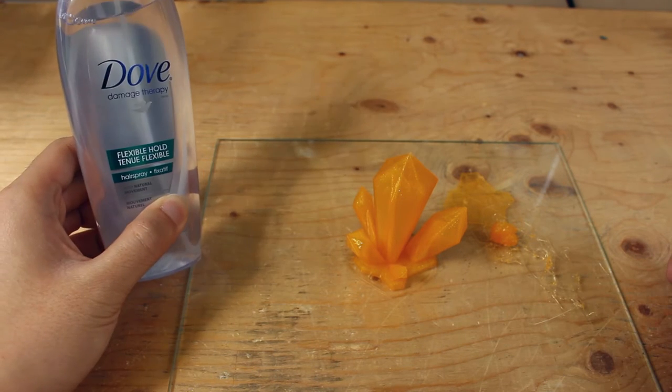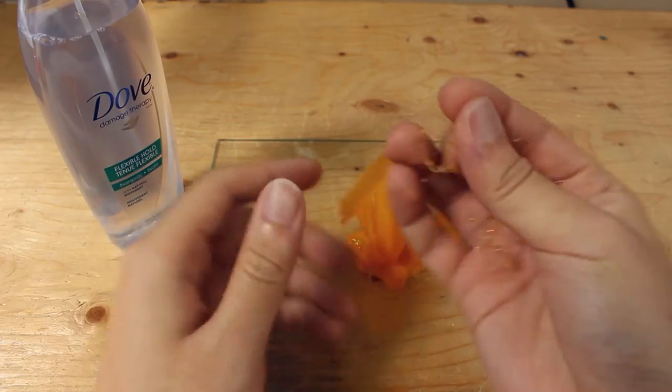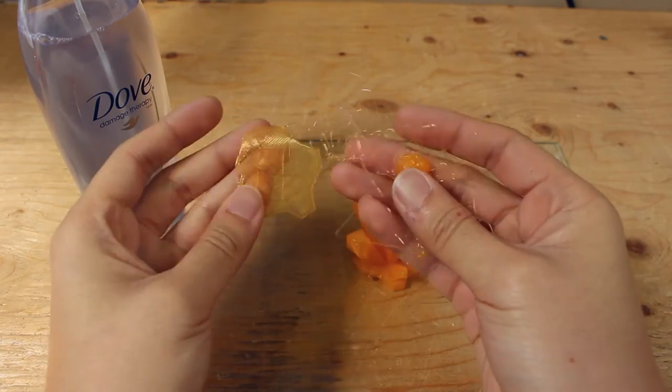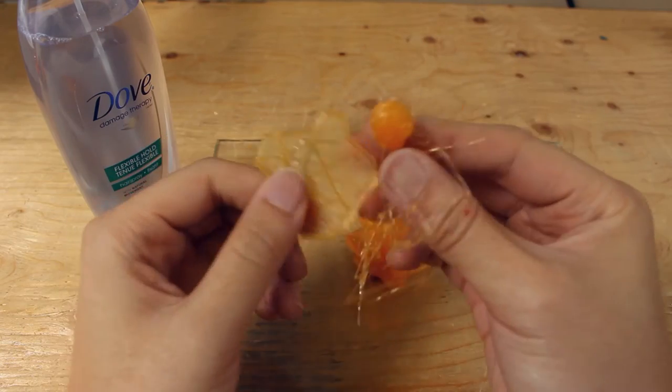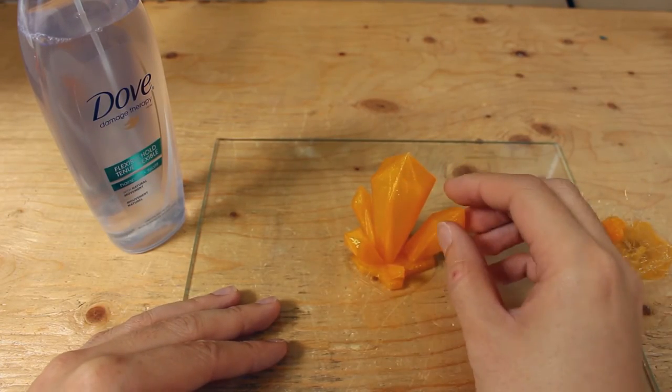Last we have the Dove Flexible Hold. As we are used to, the first print with one coat did not work. When we drenched it, the crystal printed out successfully, but it is very fragile.